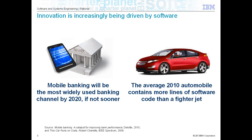This slide talks about two major aspects based on statistics from Deloitte Consulting. One is mobile banking, which in India we are trying to make mainstream and is going to be the widely used banking channel by 2020 — it's already major in countries like the Philippines and several African nations. And today's automobiles from BMW, Hyundai, and Maruti have more millions of lines of software compared to a fighter jet. That's an amazing fact.